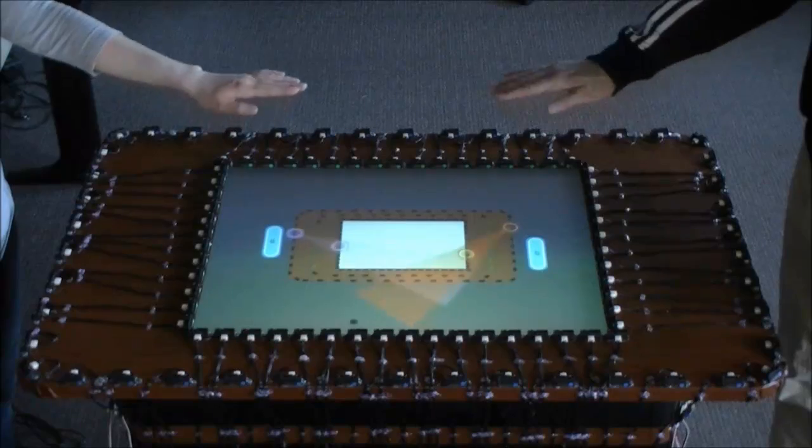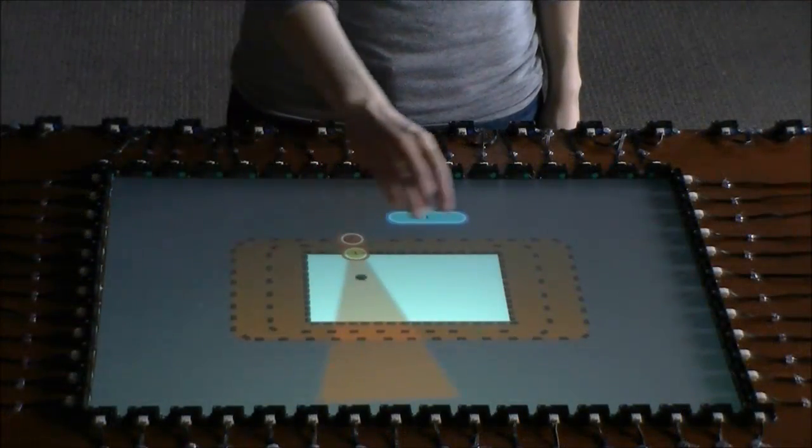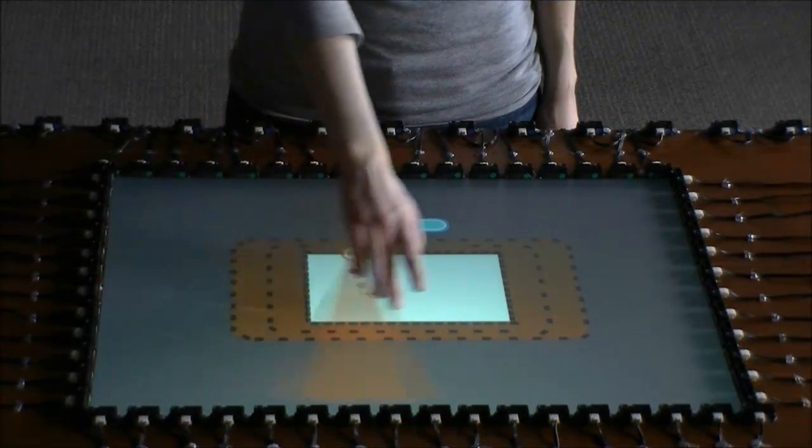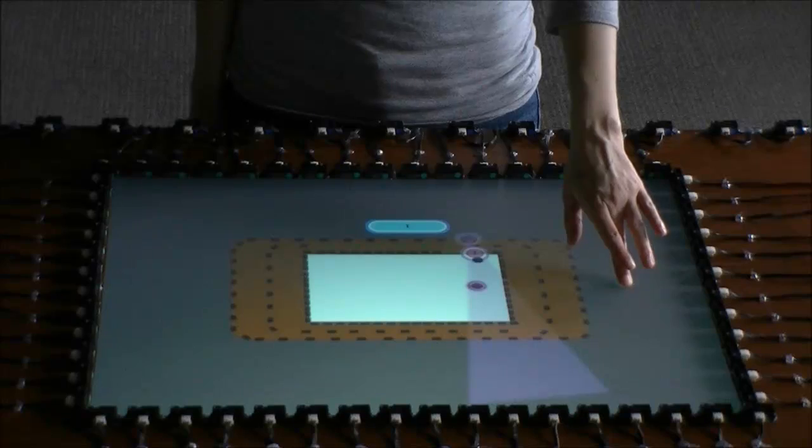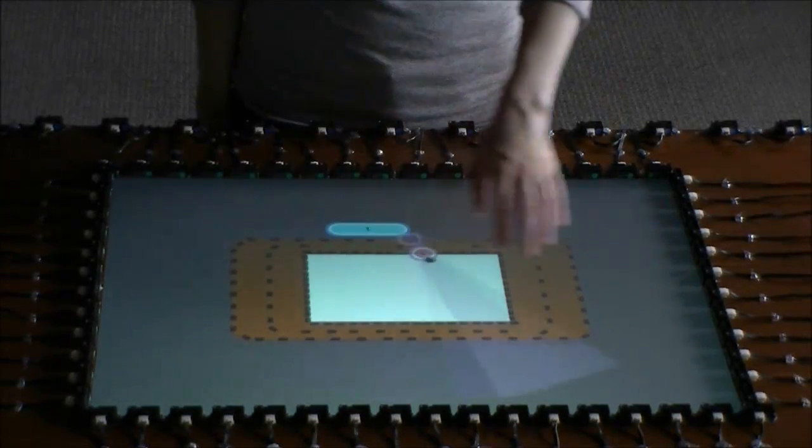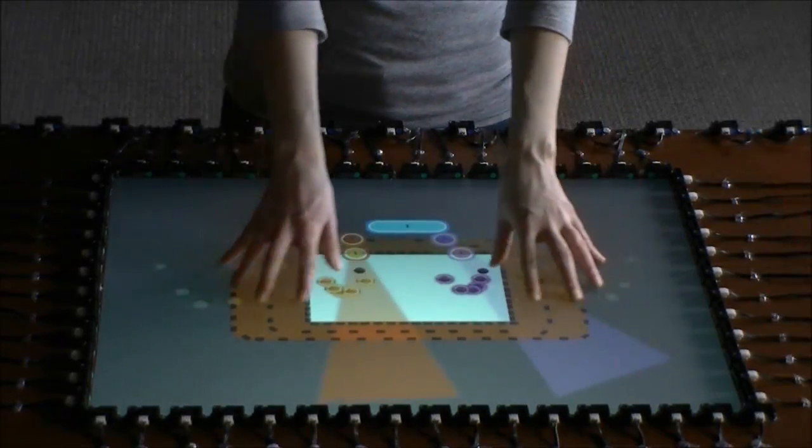Combining this information, MEDUSA can match touch events to users and their hands. Here, a touch is detected by the surface. MEDUSA is able to label this touch as coming from the right hand. Now the left hand. And now it distinguishes between right and left hands.